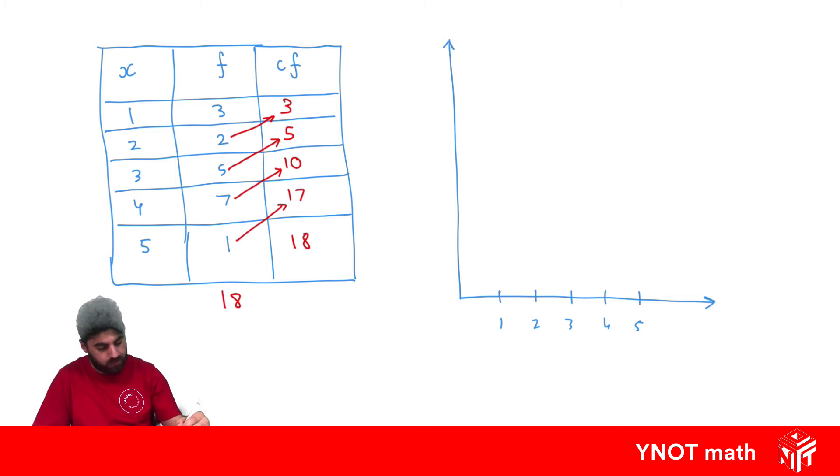And we know our frequency goes up to 18, so a good scale might be going up to 20. Make our scale.